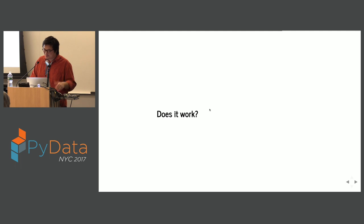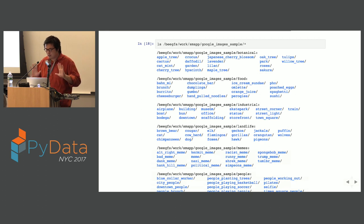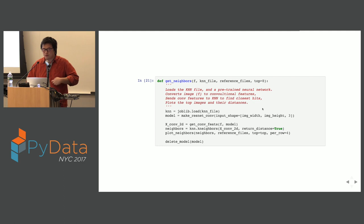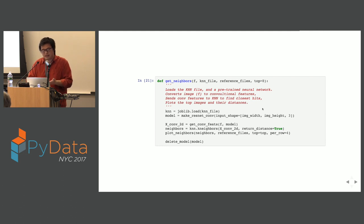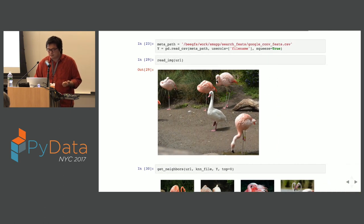Let's make sure it works. The dataset I chose was scraped from Google Images — the first 100 images per search query. It's completely random, though biased by what I think is random. I chose things like foods, different kinds of trees, people doing weird things, and different kinds of memes. I made a wrapper function for getting neighbors: you load two models — one to find neighbors and one to convert data — then convert any given input into the format for K-Nearest Neighbors to find relational data points.